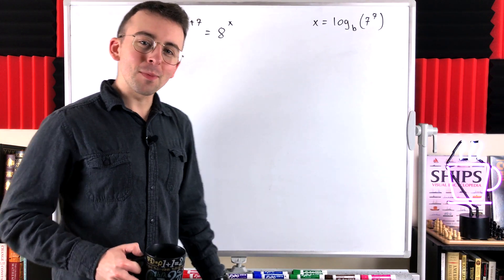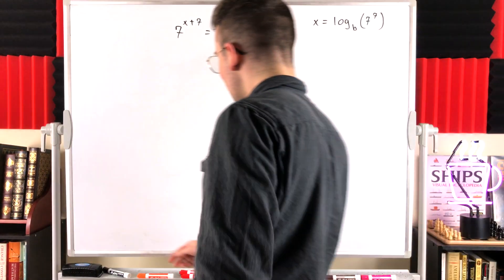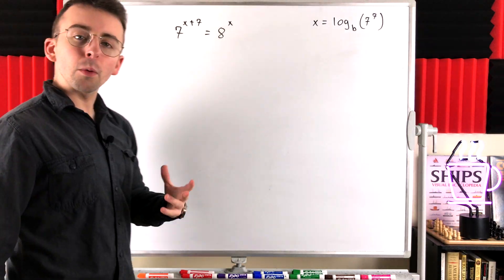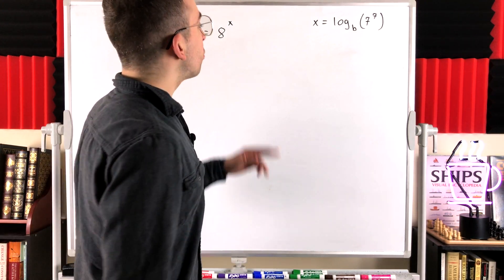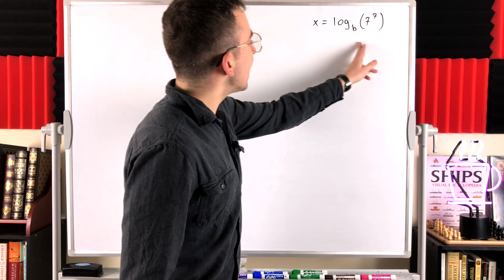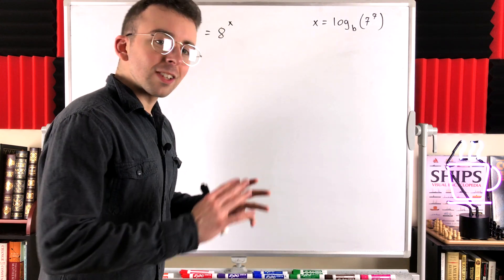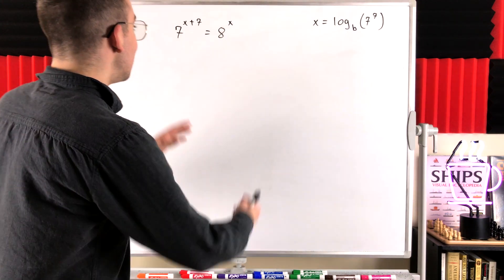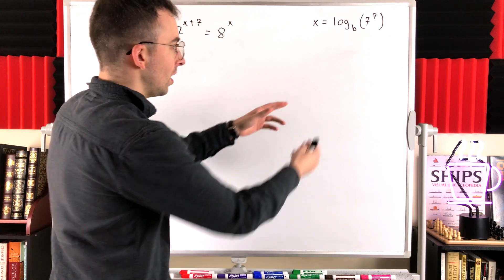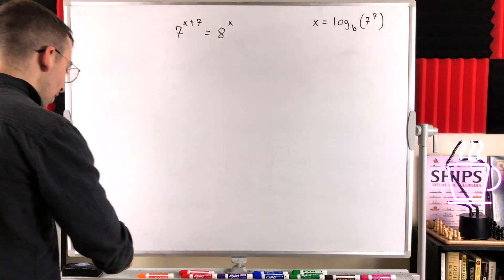There is nothing I'd rather be doing than solving this other problem with you. Let's do it. It's great to get two sips in the same episode. So here's what's going on: we're given that 7 to the power of x plus 7 is equal to 8 to the power of x.